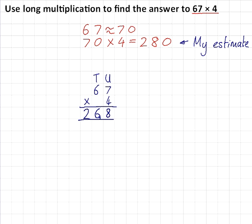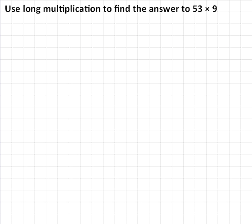Let's try another example. Question 2. Use long multiplication to find the answer to 53 × 9. As ever, I'm going to begin with finding an approximate answer. 53 is roughly equal to 50, and 50 × 9 is equal to 450. So my estimate for this question is 450.